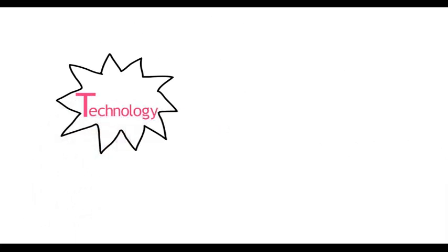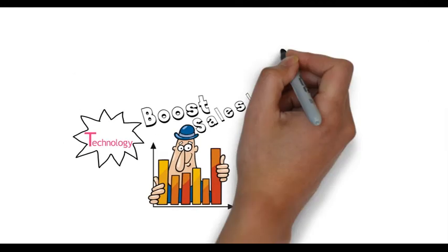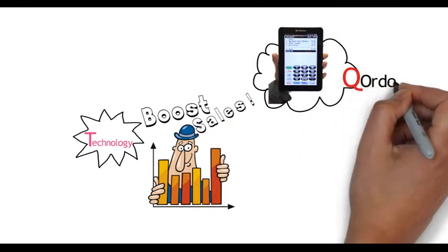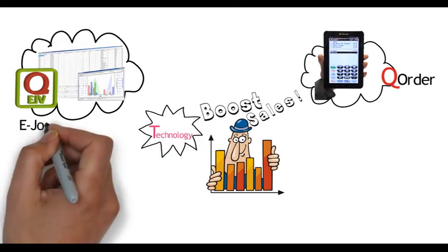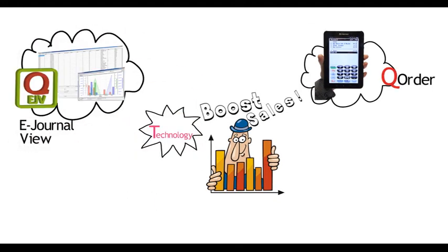Technology. Boost sales with value-added features, such as the Q-order table-side ordering app on Android that eliminates queuing, or a visually appealing e-journal view for analysis on the network.